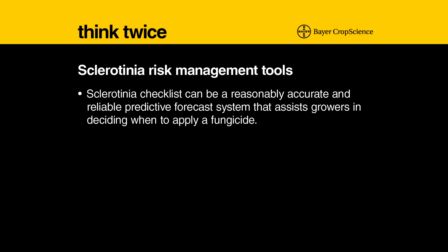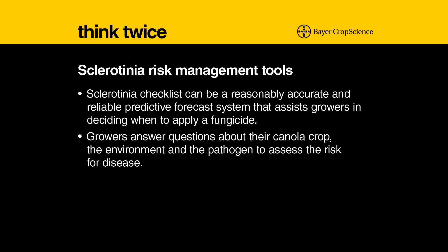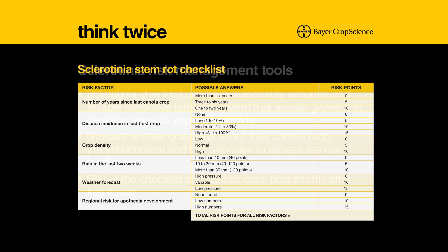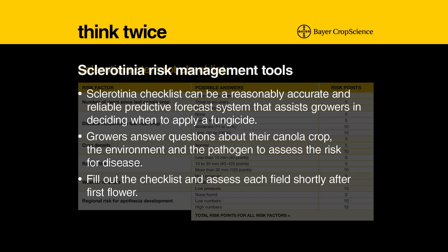Essentially how it works is a grower will answer questions about his canola crop, taking into account the environment and a little bit about the pathogen, and it will give a score. You have to do this on a field by field basis. For every paddock, you would go out at early flowering and make this assessment. It's got to be done close to the time where you would make the management decision — you can't do it pre-season. It really needs to be done fairly close to the flowering period.